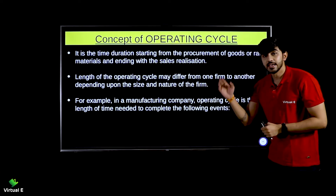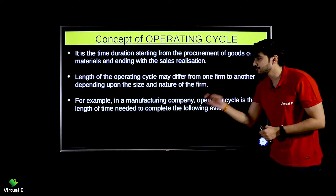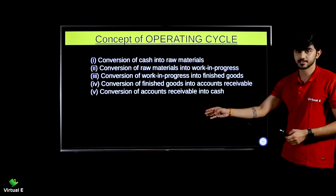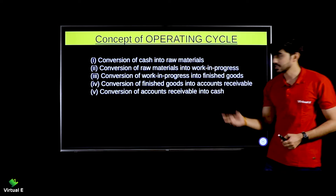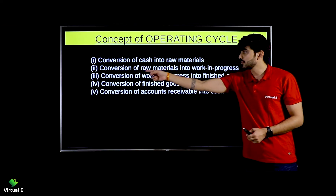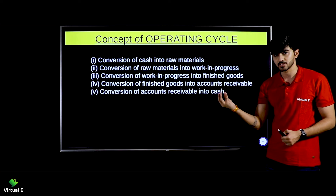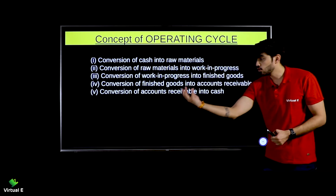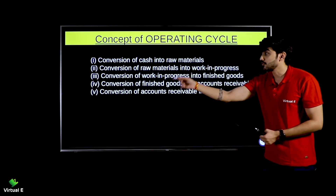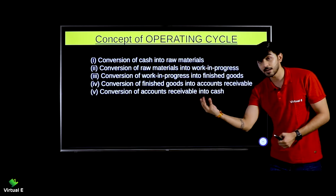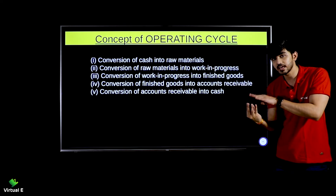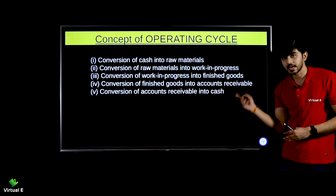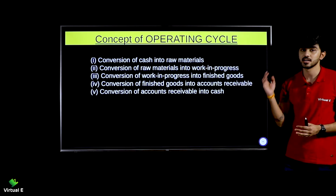For example, in a manufacturing company, the operating cycle is the length of time needed to complete the manufacturing activities — from conversion of cash into raw materials, through production, until you have account receivables. When you collect on those receivables and have the money, that marks the end of the operating cycle.